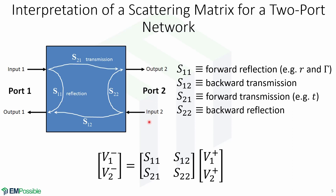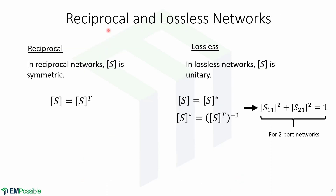We can write this in matrix form as follows. The reciprocal and lossless properties also apply for scattering matrices. In a reciprocal network, the matrix S is symmetric. In lossless networks, the matrix S is unitary, which is given by this expression.